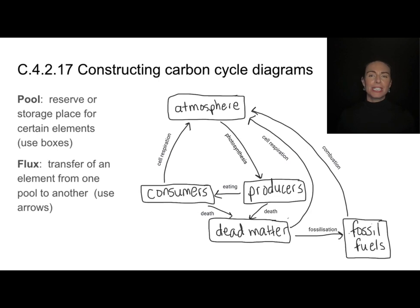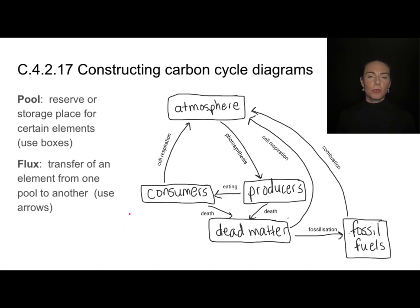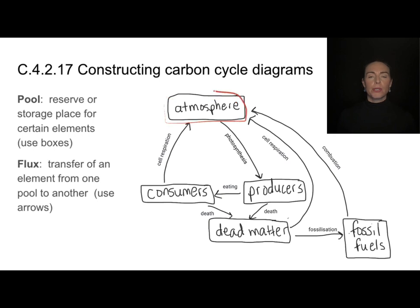So I want you to take note — this is what a carbon cycle diagram should look like. Not cute pictures of trees and giraffes, but clearly labeled pools that we surround with boxes and clearly labeled fluxes that we use labeled arrows for.